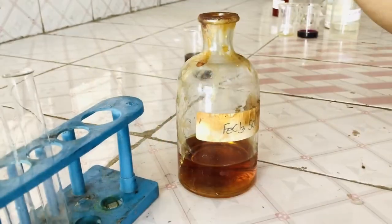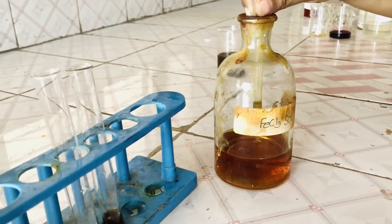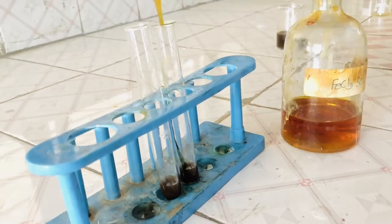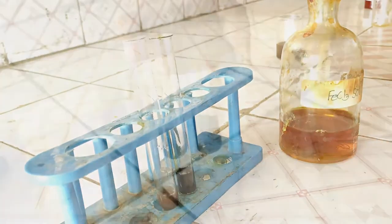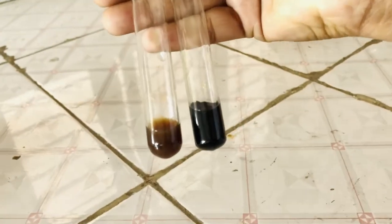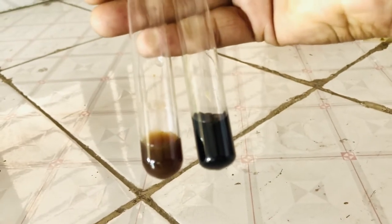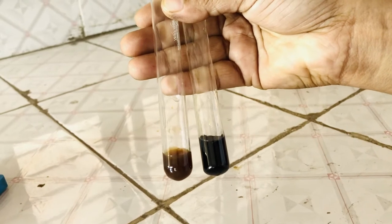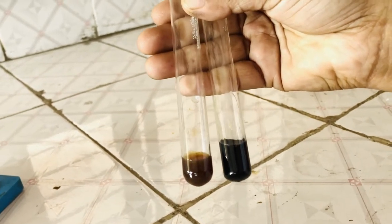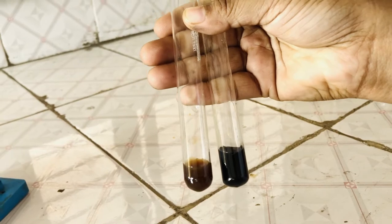Now we will add 5% FeCl3 solution in the test solution. You can see the blue-black color has appeared in the test solution as compared with the standard solution. This confirms that the FeCl3 test is positive and we have obtained amla as a hydrolyzable tannin.